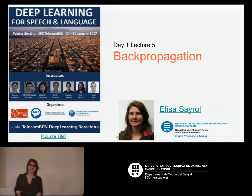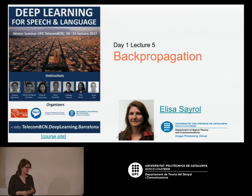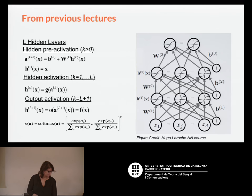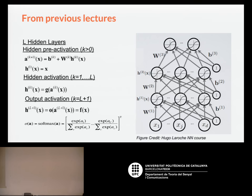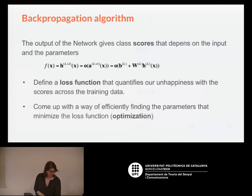I'm going to explain backpropagation. If you have taken any machine learning or pattern recognition course, you probably already know about it. We have this deep network — just to refresh — we have some parameters that we want to estimate: the weights and the biases. We have a function called 'a' which is linear, and then we use the activation function. We use F for the final output activation and G for the middle activation.